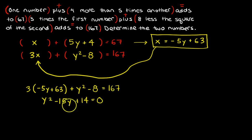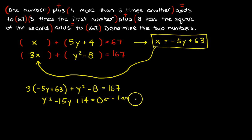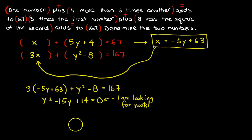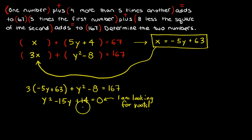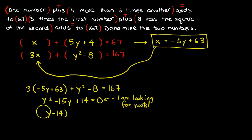Why did I want to make it equal 0? Because I've got a quadratic equal to 0, which means I'm looking for roots. I can factor this pretty easily — what adds together to give negative 15 but multiplies together to give positive 14? I'll go with (Y − 14)(Y − 1): that gives −15 and positive 14.